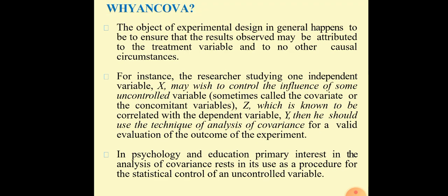Why ANCOVA? The object of experimental design in general happens to ensure that the results observed may be attributed to the treatment variable and to no other causal circumstances. For instance, the researcher studying one independent variable X may wish to control the influence of some uncontrolled variable, sometimes called the covariate or the concomitant variable Z, which is known to be correlated with the dependent variable Y.